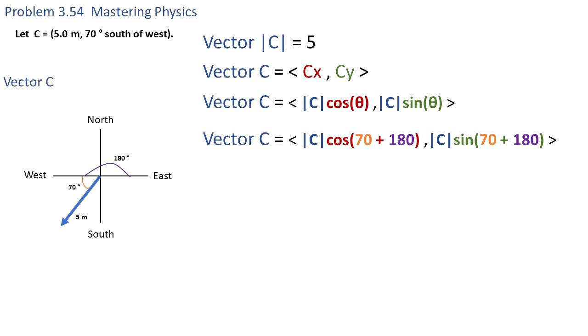So Cx equals the magnitude of C times the cosine of 70 plus 180 degrees, and Cy equals the magnitude of C times sine of 70 plus 180. We get that 5 times cosine of 250 is the Cx component, and 5 times sine of 250 is the Cy component.